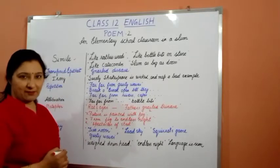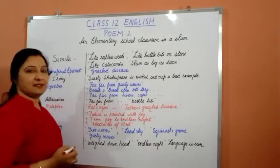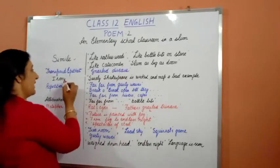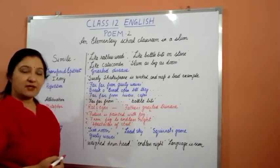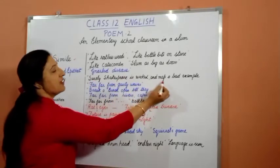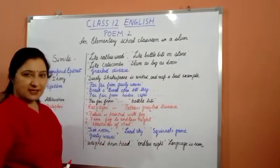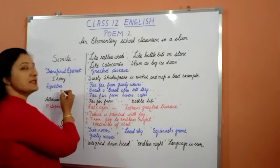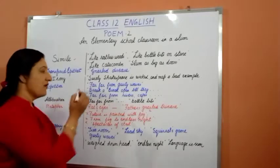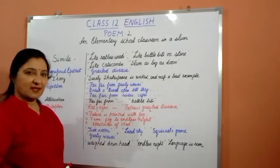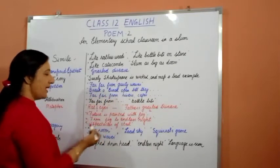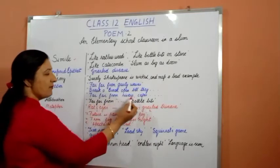Another figure of speech used in the poem is transferred epithet — the example is 'gnarled disease'. Next is irony; Spender uses irony in the expression 'surely Shakespeare is wicked and the map a bad example'. Then repetition is used in 'far, far from gusty waves', 'break, oh break, open till they break', and 'far, far from rivers and caves'.